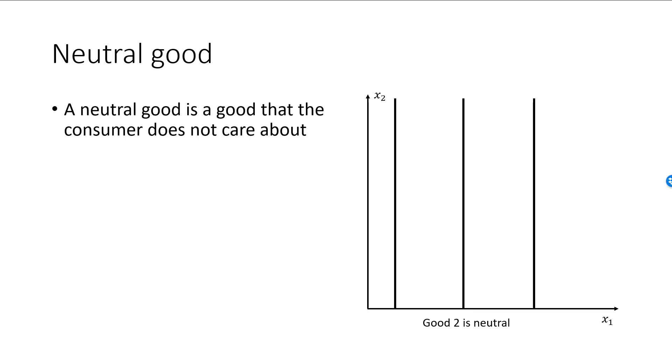In the same way, if good 1 is neutral, then indifference curves will be horizontal lines. If both goods are neutral, then the entire first quadrant will be one big indifference curve.